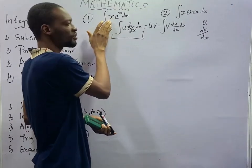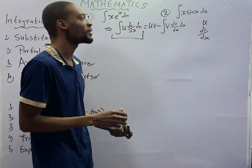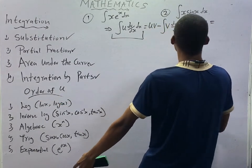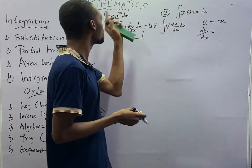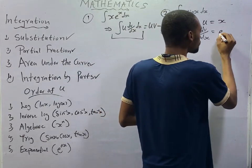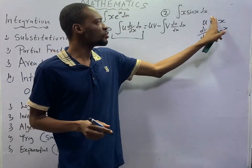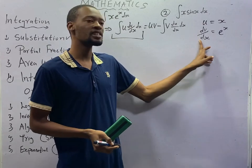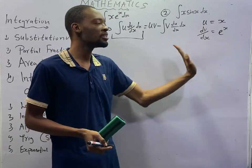Here we have an algebraic function and an exponential function. The algebraic function carries u because it comes before exponential in the order. So u = s, while dv/ds will be the other one, which is eˢ (exponential s). Now, after getting your u, differentiate your u. And after getting your dv/ds — which has already been differentiated — to get your v, you integrate dv/ds.